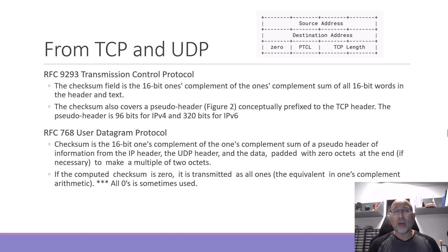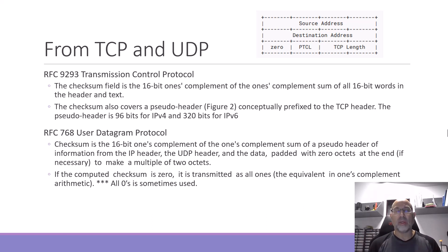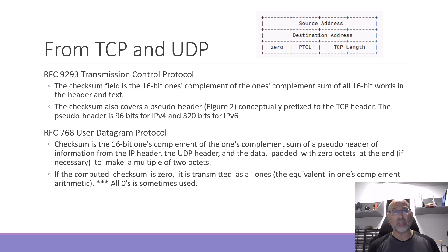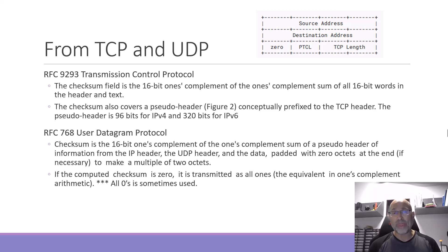A couple of things to remember: we want even division, so we're doing 16-bit words, and we pad if necessary. If the checksum is actually computed to zero, it's transmitted as all ones. Sometimes all zeros is used for testing or for some initial connection, so every once in a while you'll see a checksum of zero or all ones. There are also different sizes for IPv4 and IPv6.